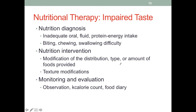If we have impaired taste, our appetite may drop, contributing to inadequate intake. Depending on the condition, impaired taste is often accompanied by swallowing and chewing difficulties. For nutrition intervention, we may modify the distribution, amount, and type of food provided, and more importantly, modify the texture or consistency of food items. This is a concern for potential malnutrition, so for monitoring and evaluation, we need to observe how much the patient is able to eat and conduct calorie counts or log a food diary as necessary to know exactly how much they are actually consuming.